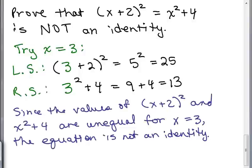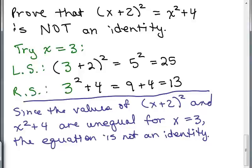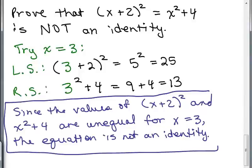So here's how we write our answer: since the values of (X plus 2) squared and X squared plus 4 are unequal for X equals 3 — I found a value for which they were unequal — the equation is not an identity. All you have to do is show that it's not true for one value.